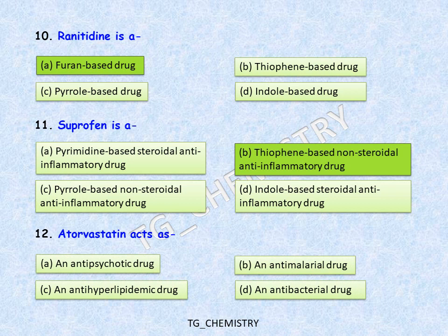Next question: atorvastatin acts as? Atorvastatin is used as a blood thinner and to reduce blood pressure. Options are: A, anti-psychotic drug; B, anti-malarial drug; C, anti-hyperlipidemic drug; D, antibacterial drug. The correct answer is option C, an anti-hyperlipidemic drug.